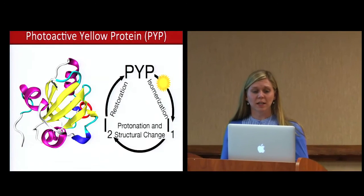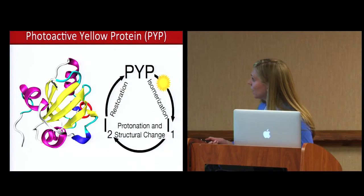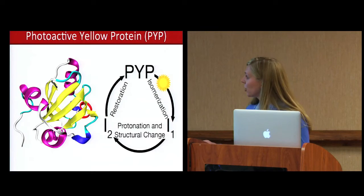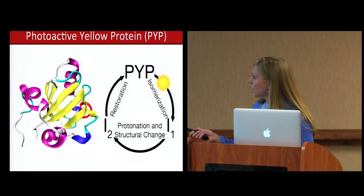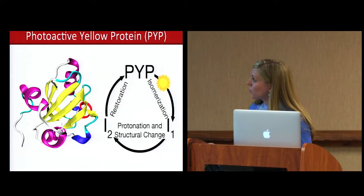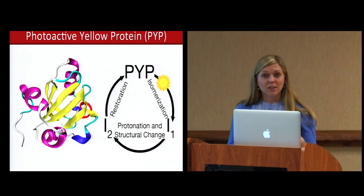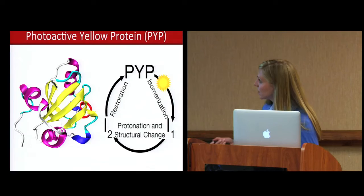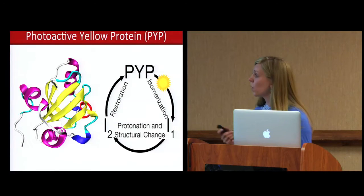So photoactive yellow protein is a photosensor for blue light in certain bacteria, and when it absorbs light it undergoes an isomerization to a first intermediate form, and then undergoes protonation and forms a second intermediate structure, and then over time it restores itself back to the PYP protein. This is a nice system to study photosensors because it's a relatively small protein, only 125 residues, and experimentally it's nice to work with because it's water-soluble.